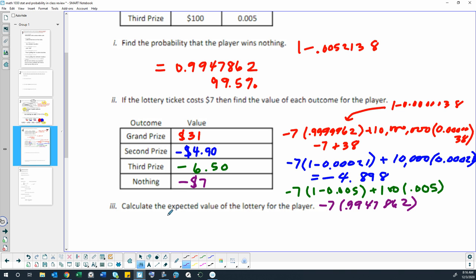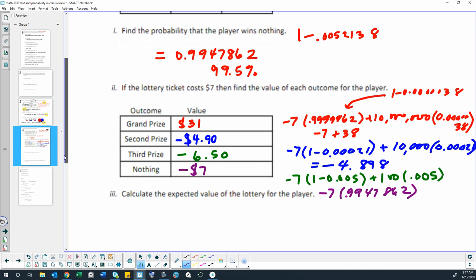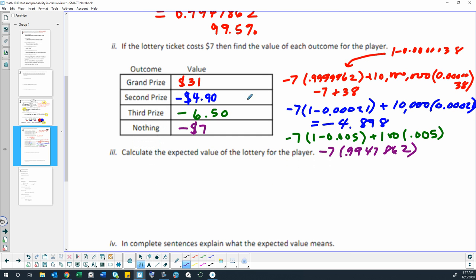We're going to calculate the expected value by adding all of these numbers together. So 31 minus 4.90 minus 6.50 minus 7. Your expected value is that after buying enough lottery tickets to win something, you'll end up making $12.60.